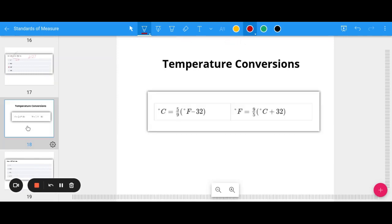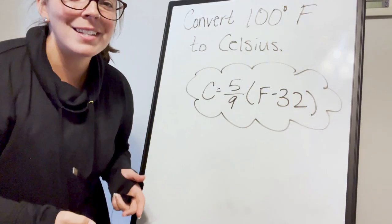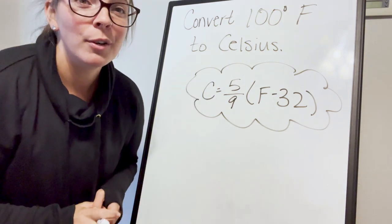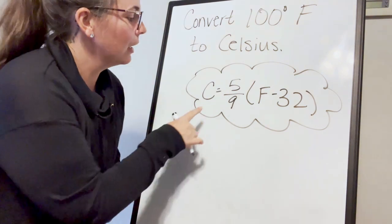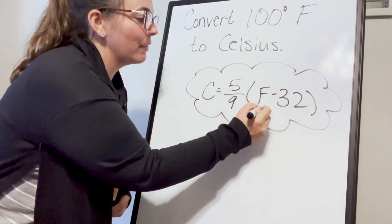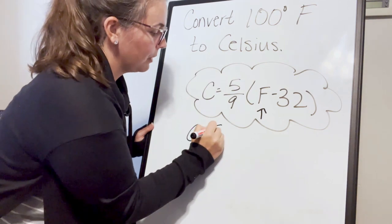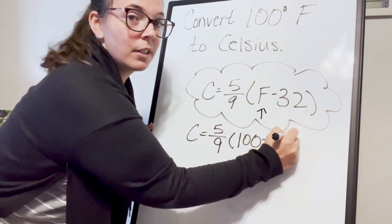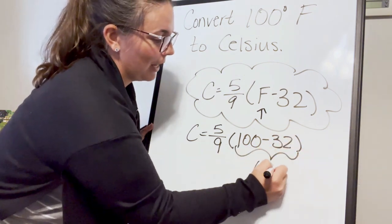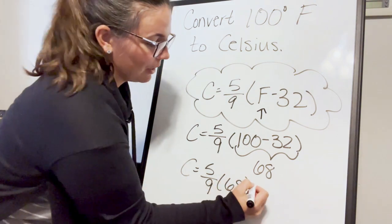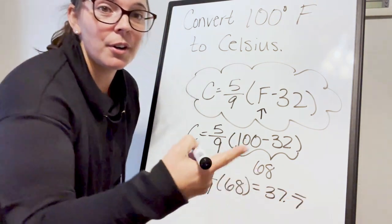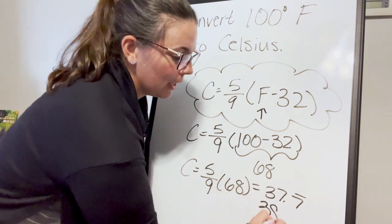Our last topic is temperature conversions. You need formulas to go from Celsius to Fahrenheit and Fahrenheit to Celsius — screenshot those. To convert 100 degrees Fahrenheit to Celsius, use the formula: C = 5/9 × (F − 32). So 100 minus 32 is 68, then 5/9 times 68 equals approximately 37.8, which rounds to about 38 degrees Celsius.